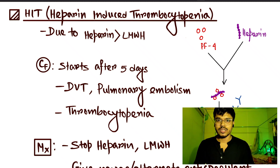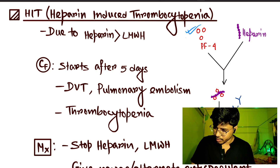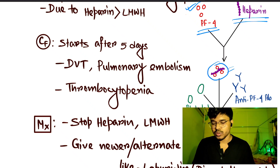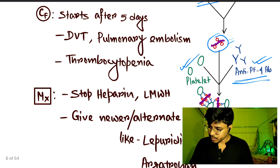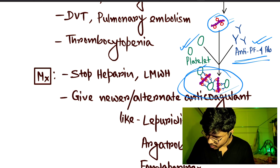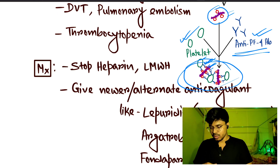This PF4-heparin complex gets attached to the platelet, along with an antibody against Platelet Factor 4. So the whole complex consists of: the platelet, the antibody against PF4, the heparin, and Platelet Factor 4 itself.